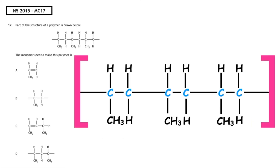This past paper question is from the National 5, 2015, multiple choice question 17. Part of the structure of a polymer is drawn below. The monomer used to make this polymer is...